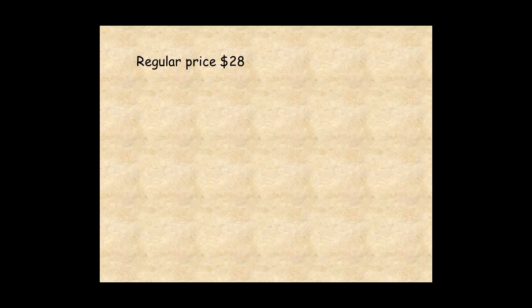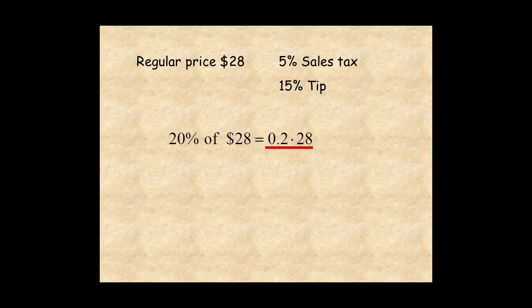In order to calculate sales tax and a tip, you can add the percents. Add the percents and calculate 20% of the regular price, or 0.2 times 28, which gives $5.60. Then add $5.60 to the regular price for a total price of $33.60.